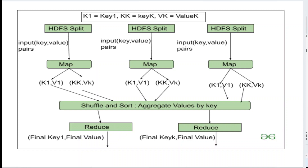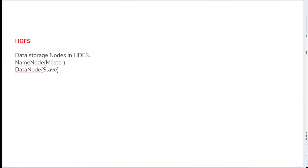In the HDFS split diagram, input data is sent to the map function, which generates key-value pairs such as k1,v1 through kk,vk from multiple map functions. These are forwarded to shuffle and sort, which organizes them by key, then passed to the reducer function for aggregation and sorting, producing the final key-value output. This diagrammatic representation shows how splitting, mapping, shuffling, sorting, and reducing work together end to end.